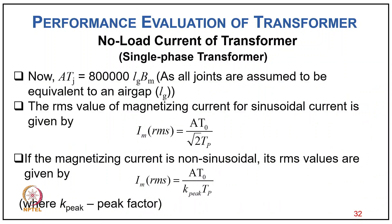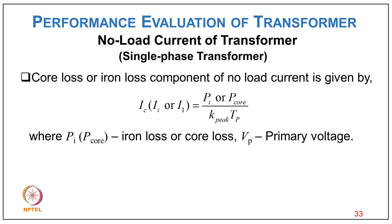The joint MMF ATj = 800,000 × lg × Bm. The RMS value of magnetizing current for sinusoidal current is Im(rms) = AT₀ / (√2 × Tp). For non-sinusoidal magnetizing current, Im(rms) = AT₀ × kf / Tp, where kf is the peak factor. The core loss (iron loss) component of no-load current is Ic = Pc/Vp for single-phase, or Ic = Pc/(kf × Vp) for three-phase transformers.